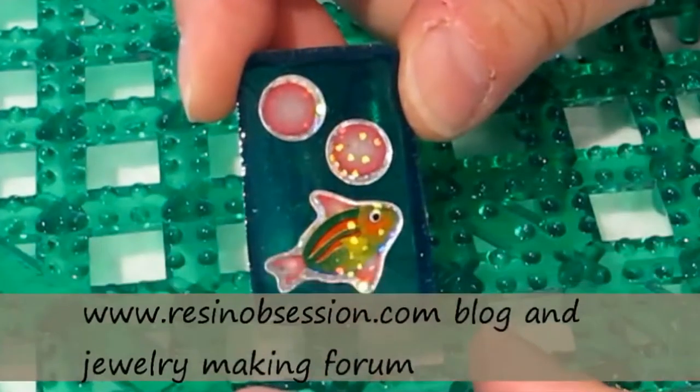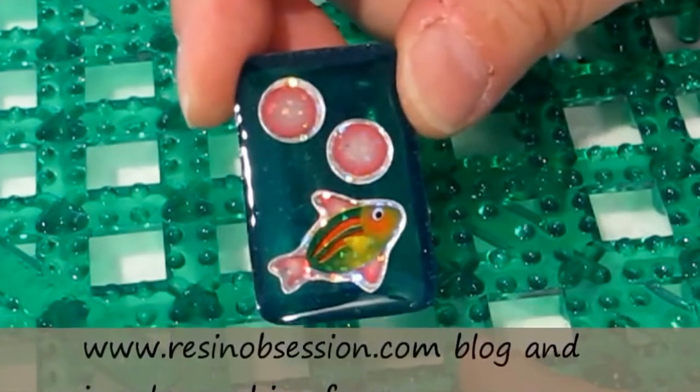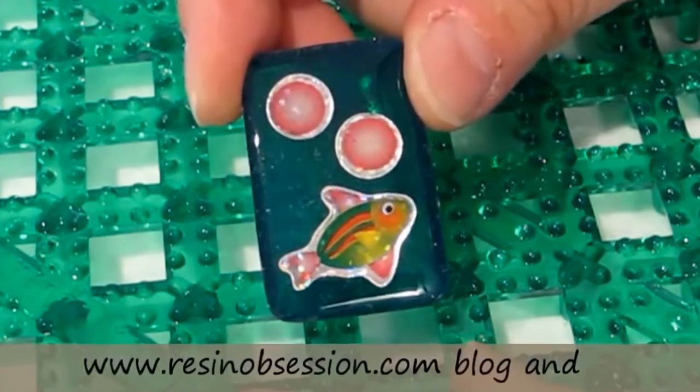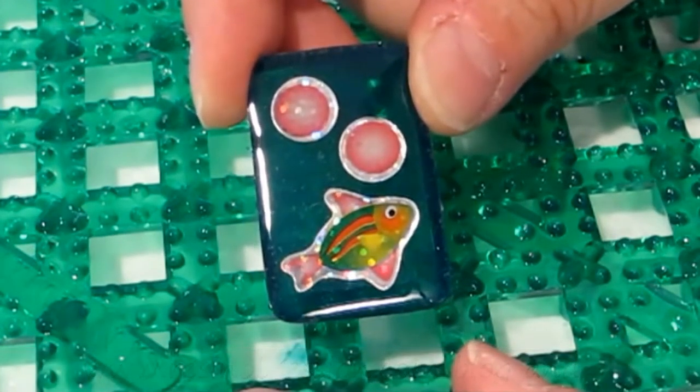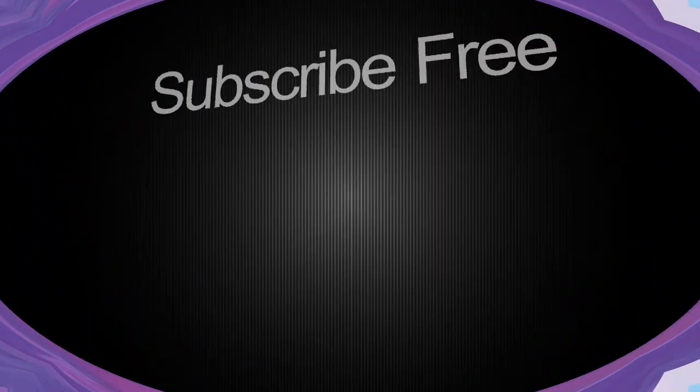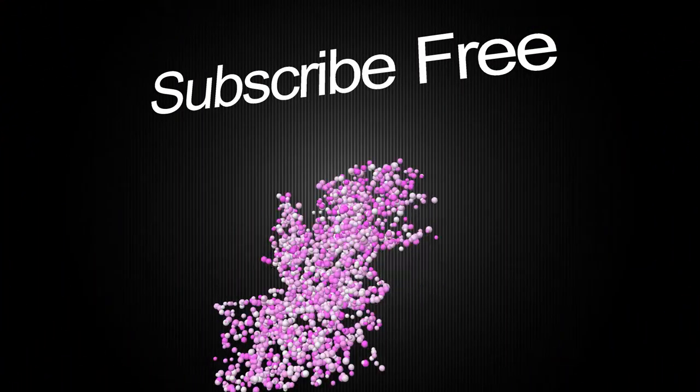So there we go. That's an easy way to get a gloss finish on your resin charms. At this point now, you can finish out however you want. You can try and drill through, you can try and put a ring at the top, but you've got yourself a super nice pendant.